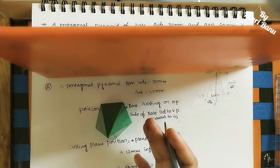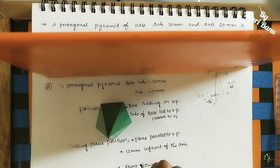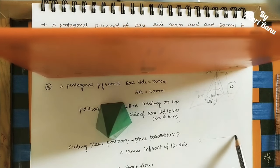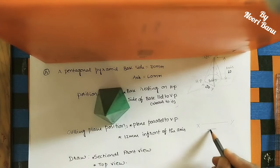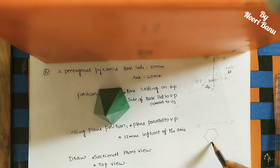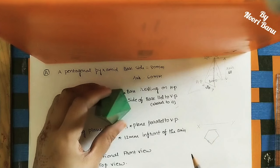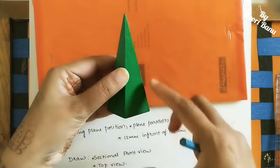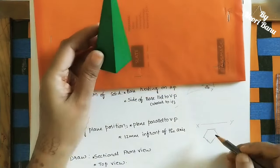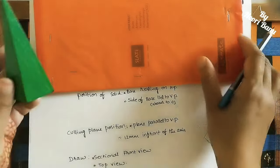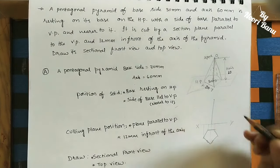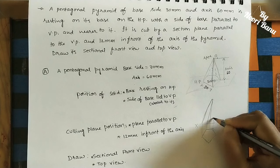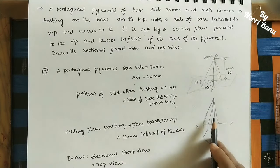We have to do the projections of the solid: the front view and the top view. Initially we do the top view — we see the pentagon from the top. The pentagon side is parallel to VP, so we draw it accordingly below XY. After that we do the front view on the vertical plane, where we can see the entire height and the triangular faces. The height is 60 mm.